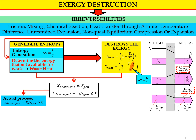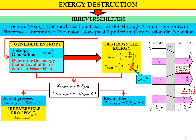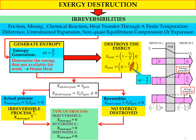From this relation, the exergy destroyed equals T_not times entropy generated, and it should be larger than zero. In actual processes with losses and irreversibilities, exergy destroyed is greater than zero. For a reversible process, exergy destroyed equals zero because there are no losses. We can summarize: for an irreversible process, X_destroyed > 0; for a reversible process, X_destroyed = 0; and for an impossible process, X_destroyed < 0.